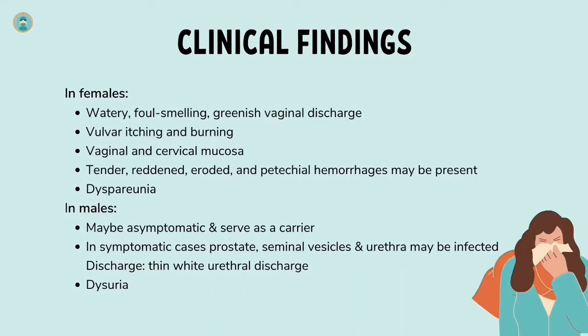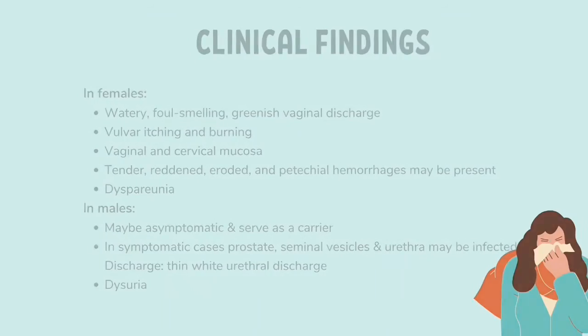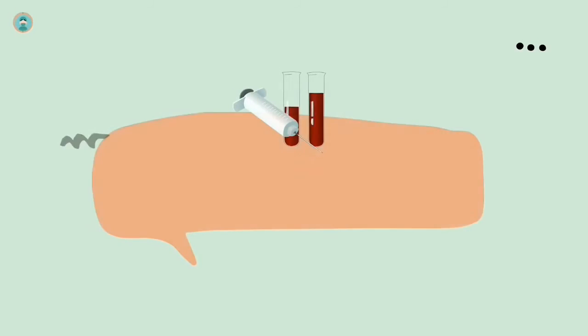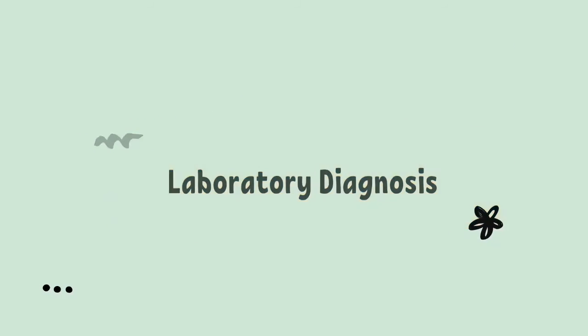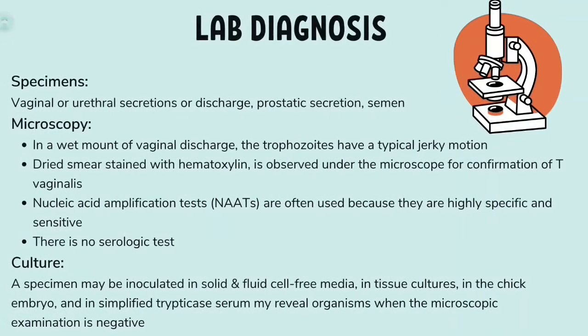In males, the infection may be asymptomatic and the male may serve as a carrier. In symptomatic cases, the prostate, seminal vesicles, and urethra may be infected. The discharge is thin and white; urethral discharge and dysuria may be present.